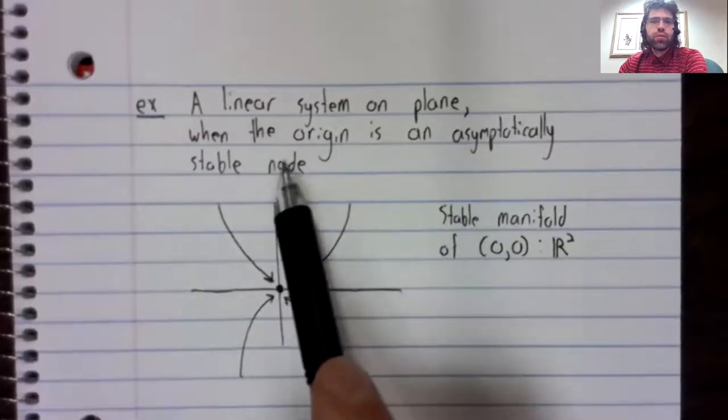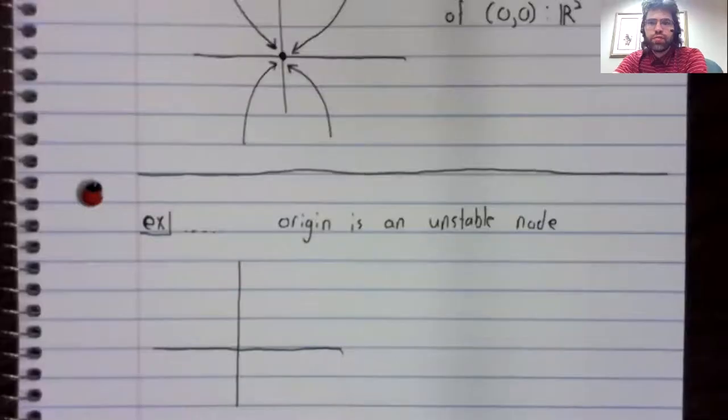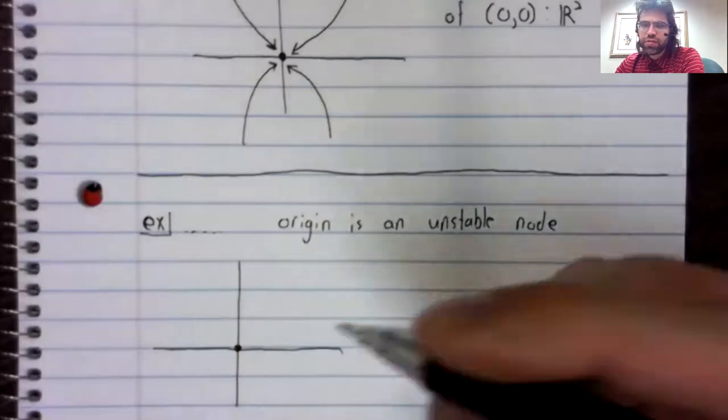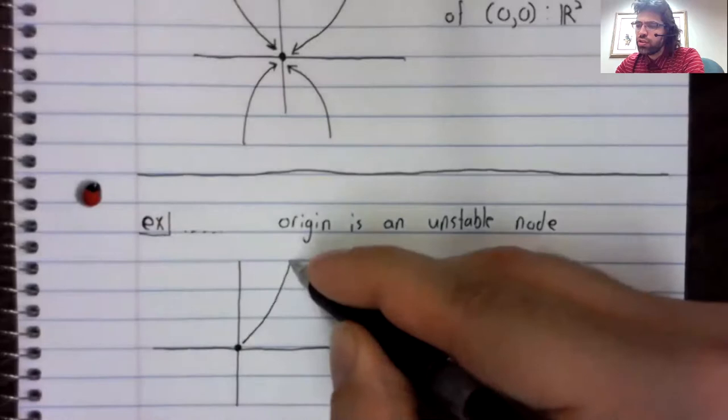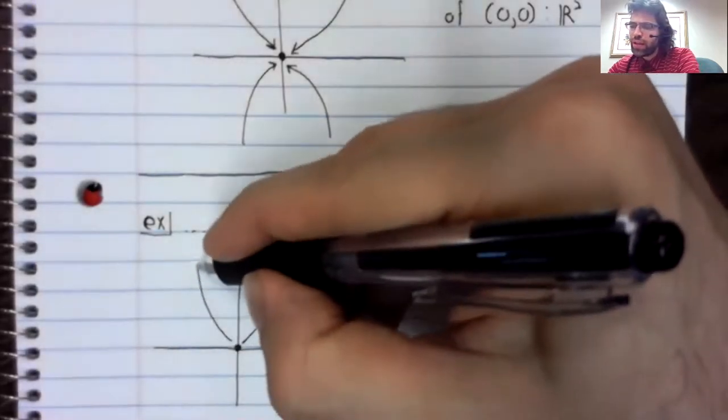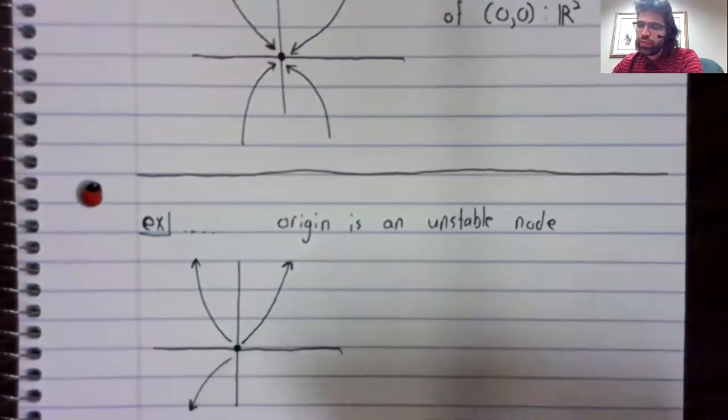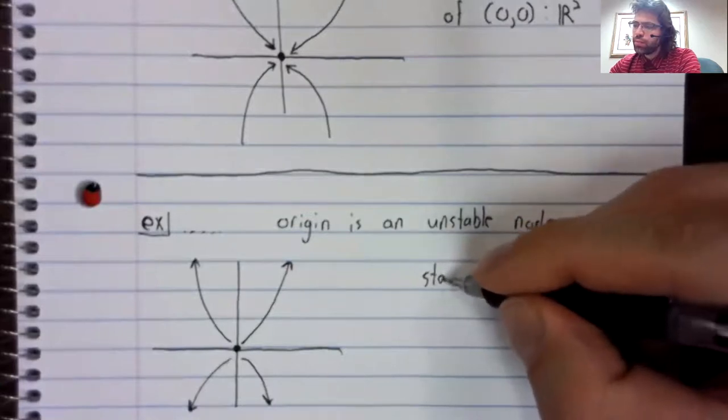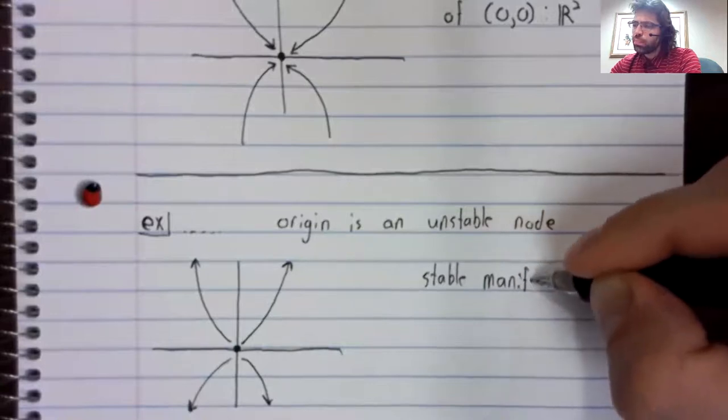Now a node can be asymptotically stable or unstable. If we have two positive eigenvalues, trajectories all converge away from the origin. And the stable manifold is almost empty.